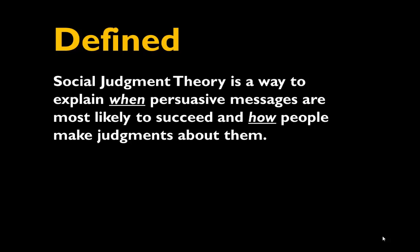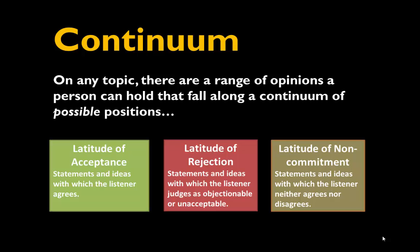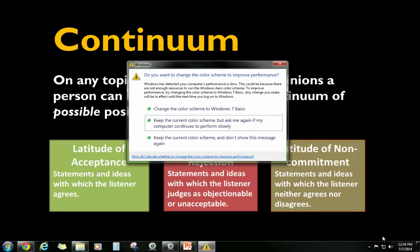On any topic or issue, there are a range of opinions that a person can hold, and you want to think about these as falling along a continuum of possible positions. A statement may fall within someone's latitude of acceptance — these are statements and ideas with which the listener agrees. A statement may fall within their latitude of rejection — statements and ideas the listener disagrees with or finds objectionable. And then there's also the latitude of non-commitment — statements and ideas with which the listener neither agrees nor disagrees.